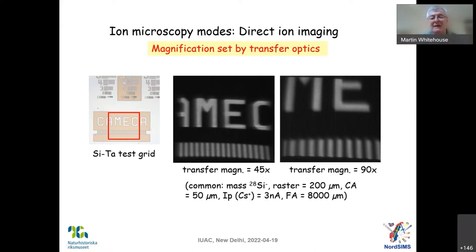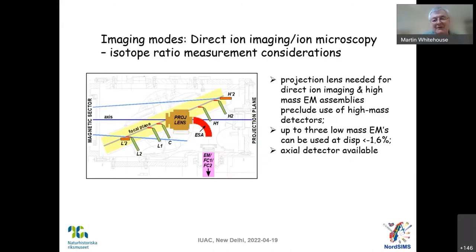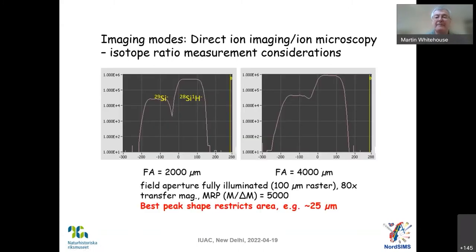Dynamic ion imaging can also be used as a way to measure isotopes with the multi-collector system. But one problem when doing direct ion imaging is that if we want to look at the sample, we have to have the so-called projection lens down in the instrument, and it blocks access to the high mass detectors. So we can only use three low mass detectors in this particular mode. Another aspect to bear in mind is that much of the instrument's high mass resolution performance is determined by having a very small image passing through. If you have a very big image, you get aberrations and a less well-defined peak flat.